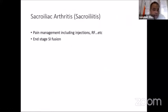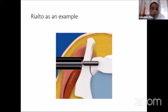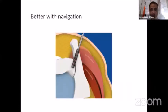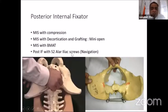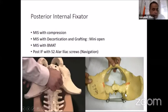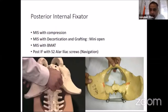The other indication for this ilio-ilial fixation is fusion of arthritic sacroiliac joints. Various devices are currently used for minimally invasive sacroiliac joint fusion requiring navigation or image intensification, but our device can work without those — by fixing, compressing, and performing decortication and grafting of the sacroiliac joint in a mini-open way, or by compressing and using bone marrow aspirate as an adjunct for fusion. It can also be used with S2 iliac screws, works very well, and long-term results are about to be published. Thank you very much.